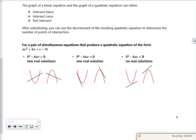Right then, so it says here the graph of a linear equation and a graph of a quadratic can either intersect twice, intersect once, or not intersect. You can see that from the three diagrams below where it's got two intersects, one intersect which is a tangent.